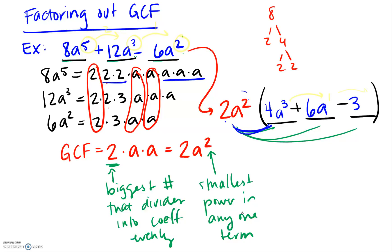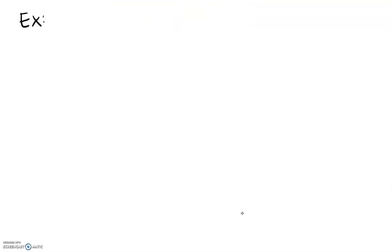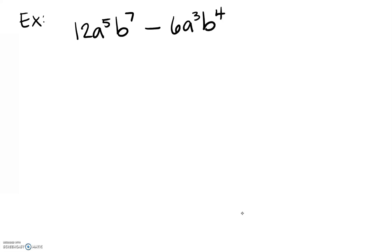Let's do one more example with a little extra time. We'll try 12a to the fifth b to the seventh minus 6a cubed b to the fourth. First we need to find the GCF. This time I don't want to write out the full prime factorization, so we'll try to do it directly. What number divides into both 12 and 6?